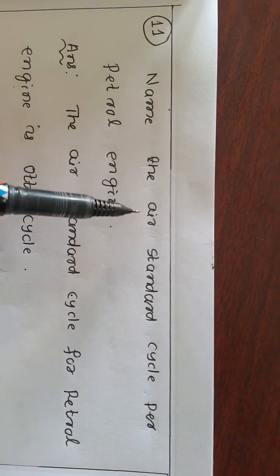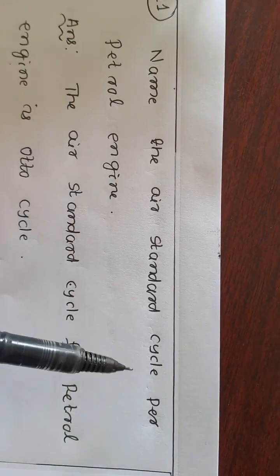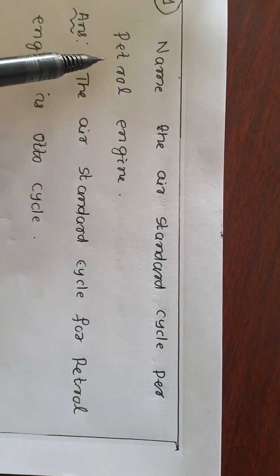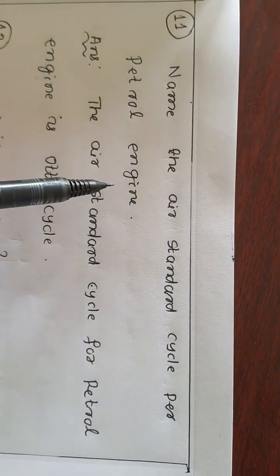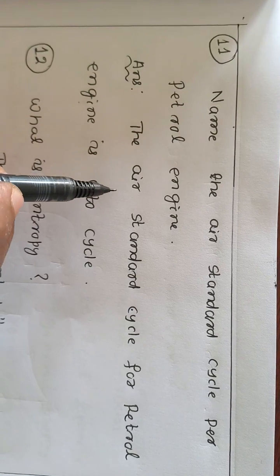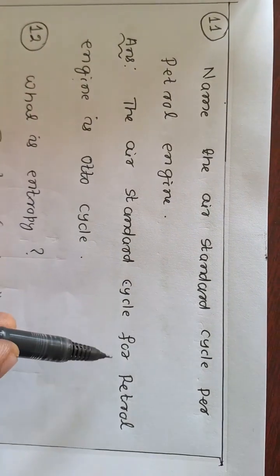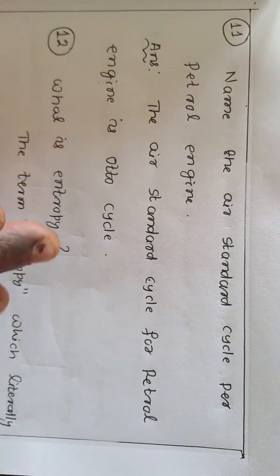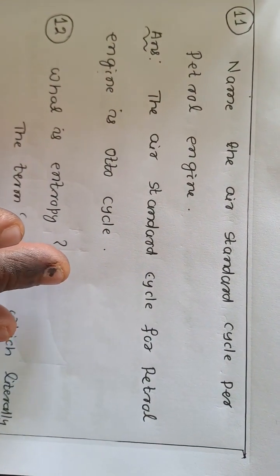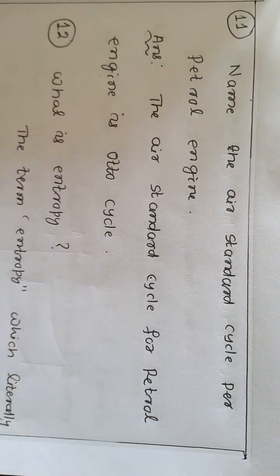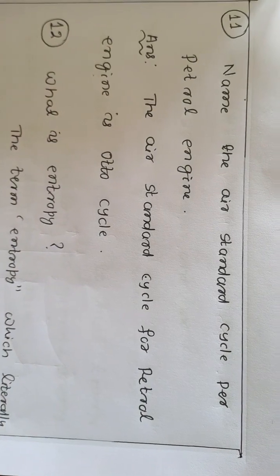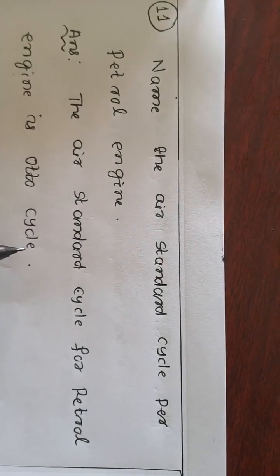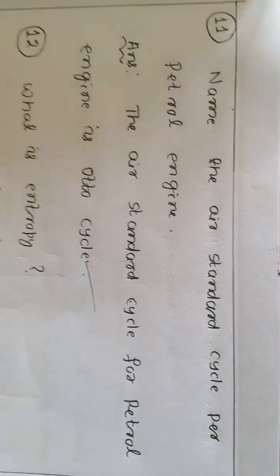Name the air standard cycle for the petrol engine. Generally, the air standard cycle for a petrol engine is the Otto cycle. That means, a petrol engine works on the Otto cycle.